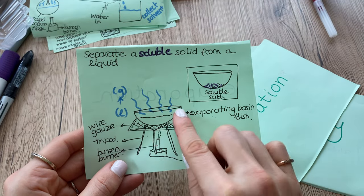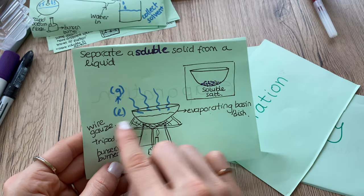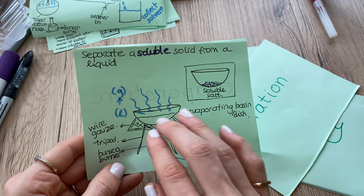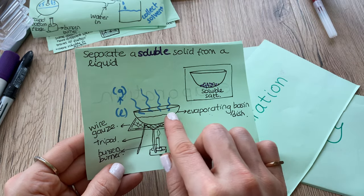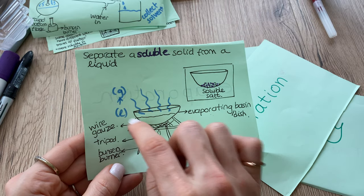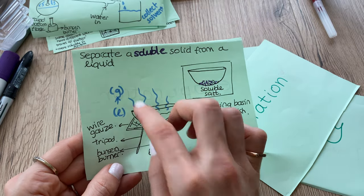I have my evaporating basin dish, my wire gauze on top of the tripod, and a Bunsen burner heating these up. All of the liquid solvent is going to turn into gas, it's going to evaporate, leaving me the soluble salt behind. That's evaporation.